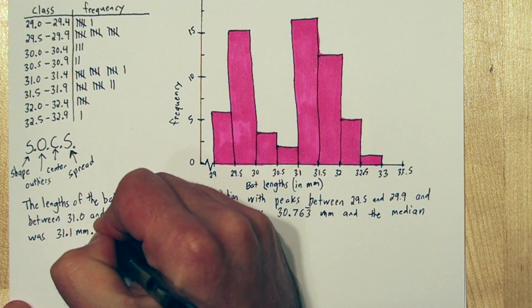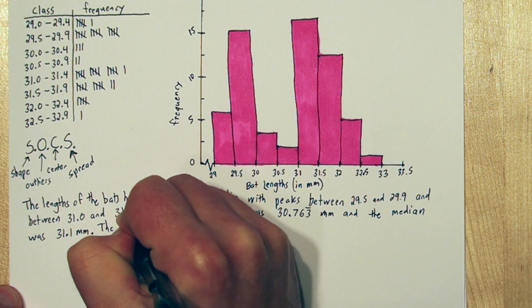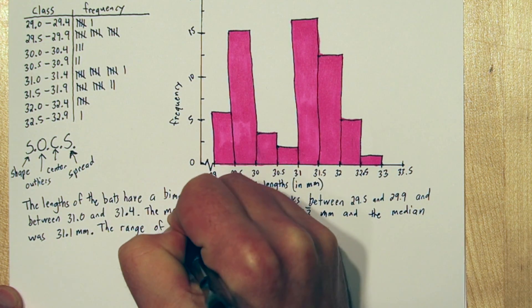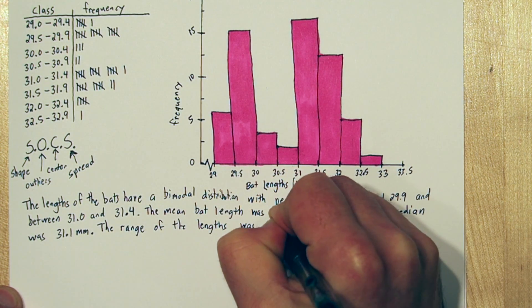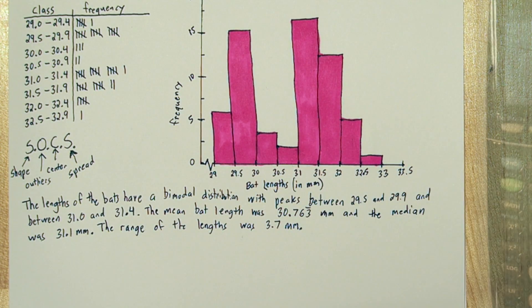For spread, let's talk about the range. The minimum bat length was 29.2, and the maximum was 32.9. So if we subtract those, we see the range is 3.7.